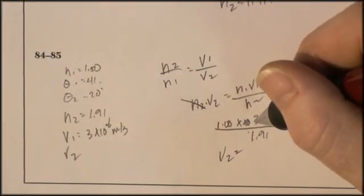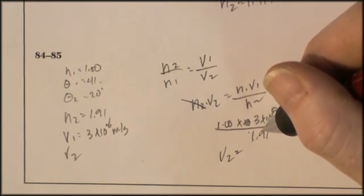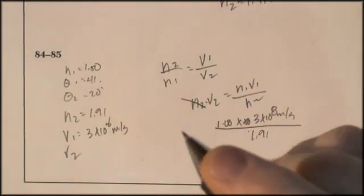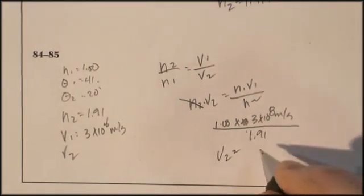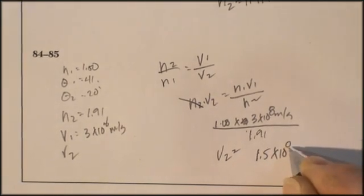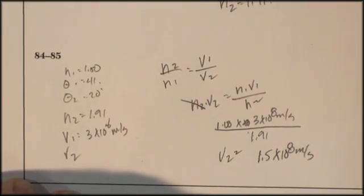This is what I knew what to do before I even started. 3 exponent 8 divided by 1.91. And I've got 1.5 times 10 to the 8. Alright, that one is done for us.